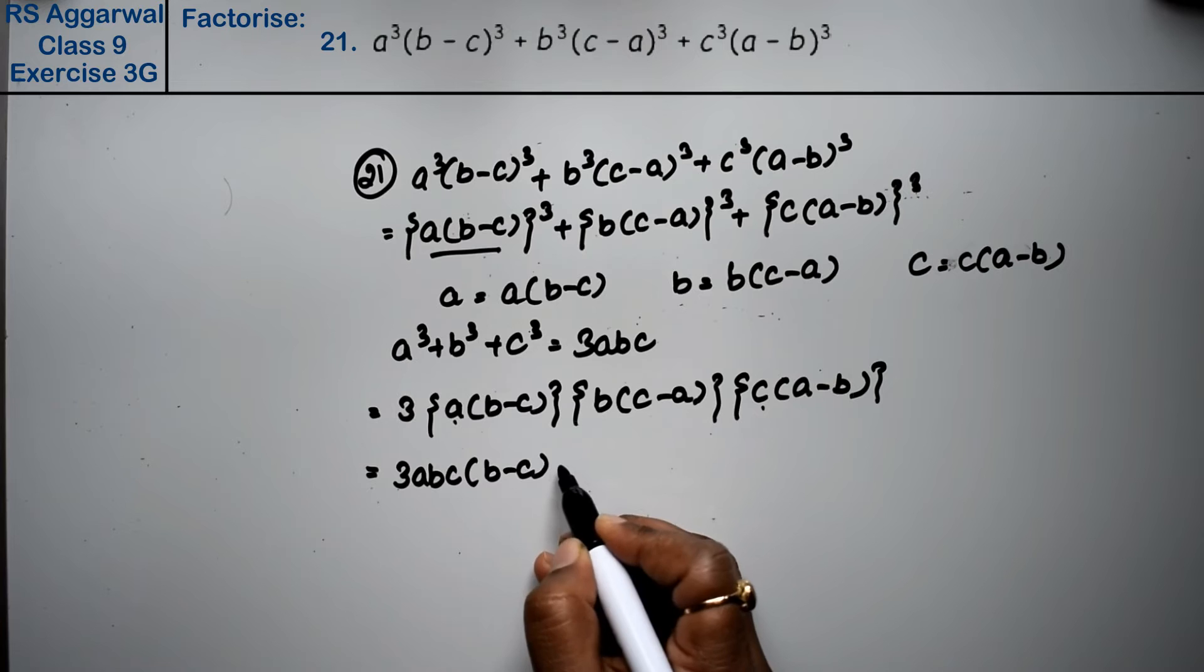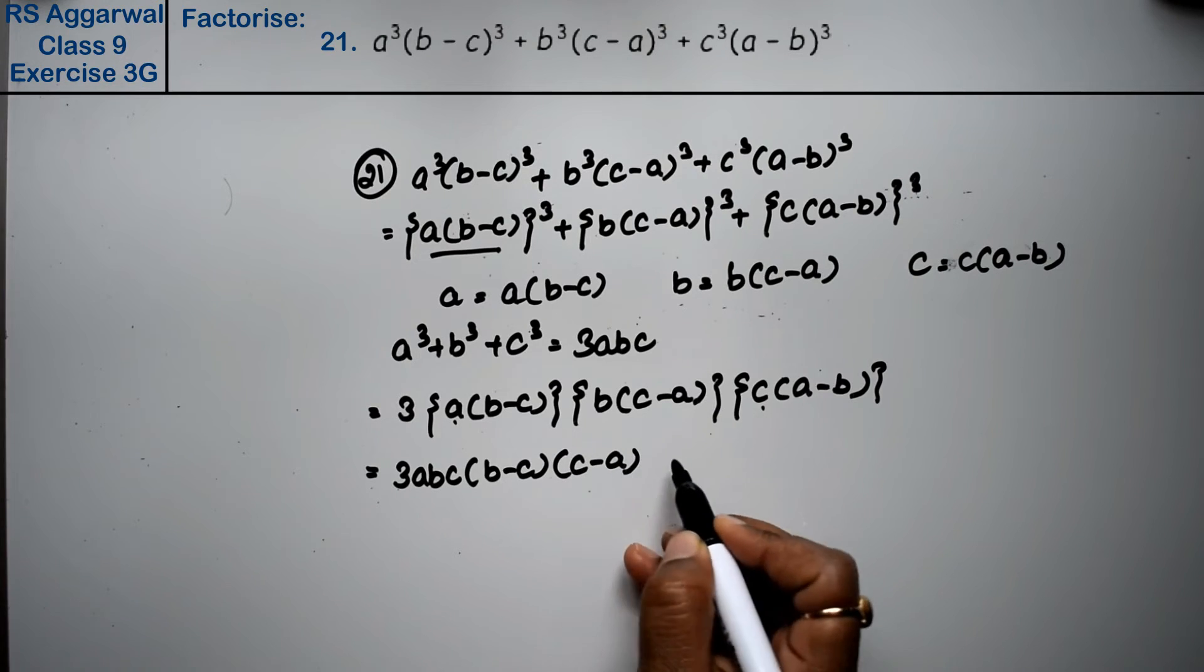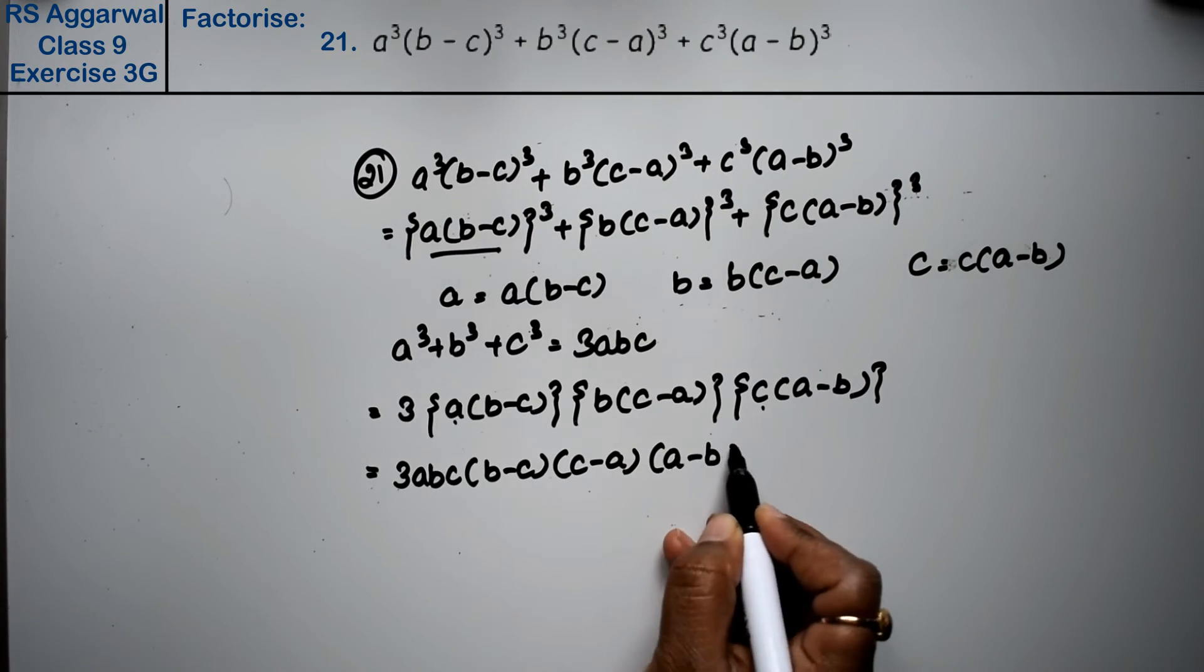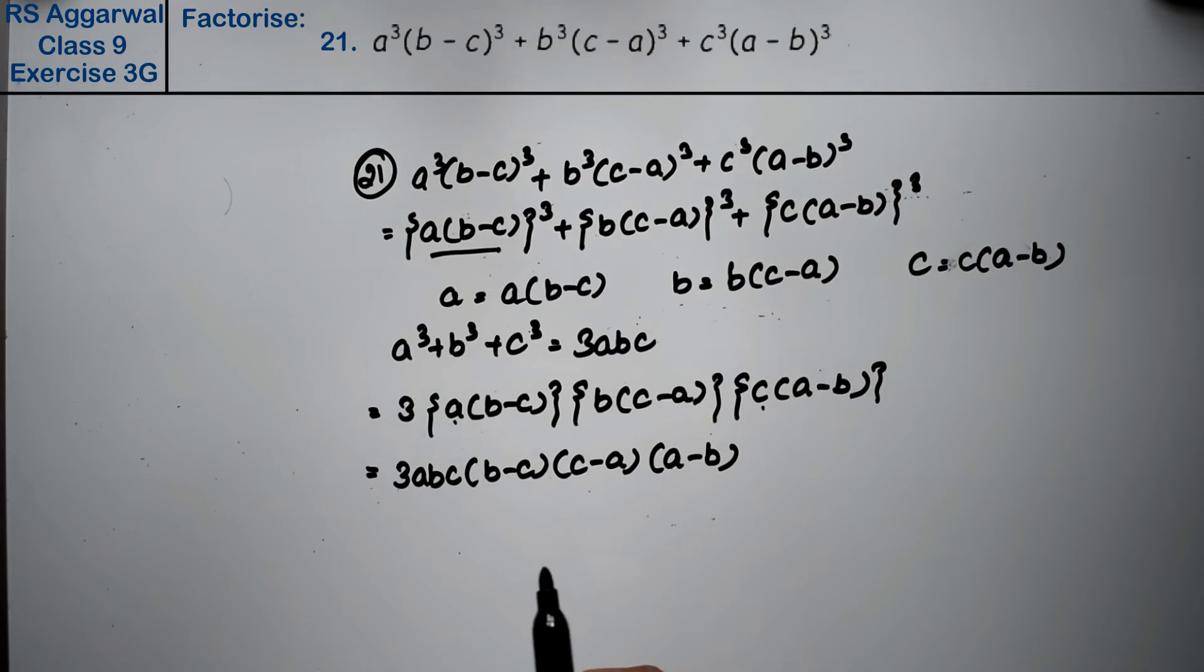These brackets are (b - c), (c - a), and (a - b). If you open it, it will be the answer, just like after opening it.